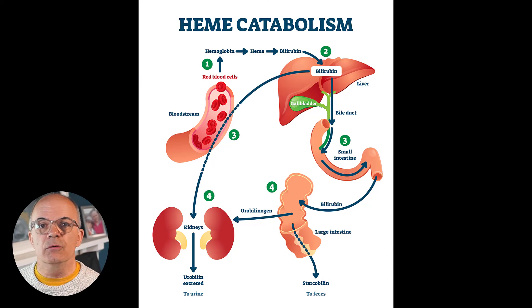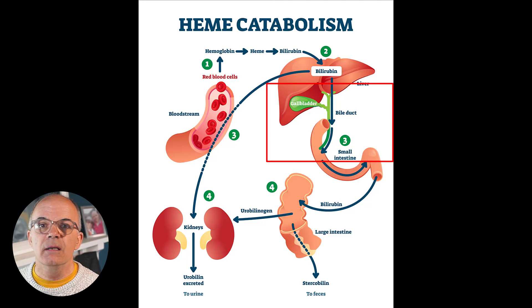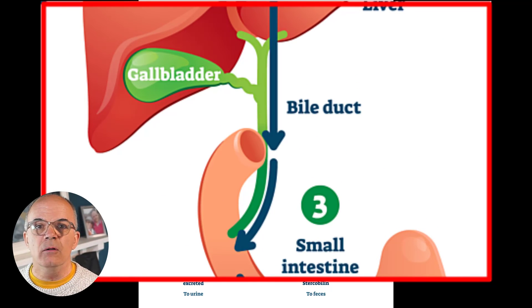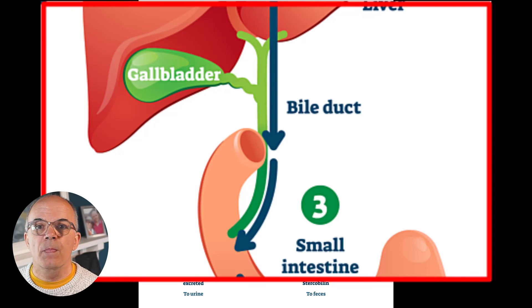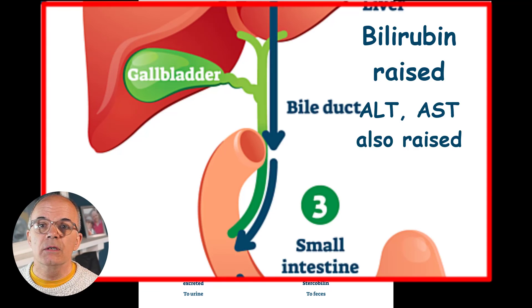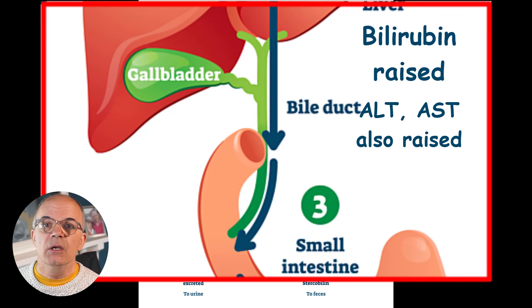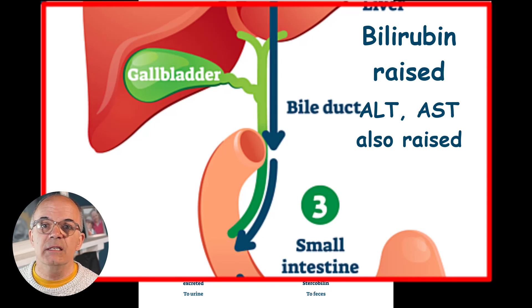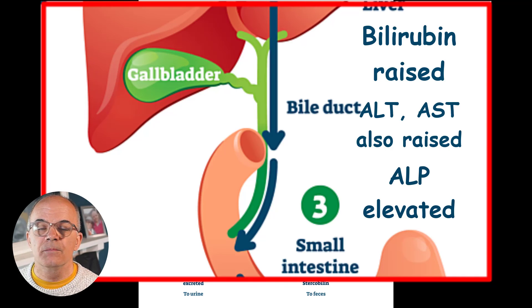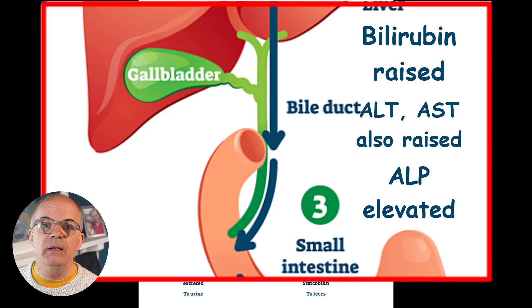Post-hepatic causes of jaundice are mainly related to the biliary tree — anything that slows down the movement of bile, or cholestasis. So gallstones, strictures of the gallbladder, or tumours within the biliary tree. This will cause the bilirubin to back up, which will also cause liver damage. Unlike intra-hepatic damage where the alkaline phosphatase will rise only slightly, in post-hepatic causes the ALP — alkaline phosphatase — will be significantly elevated. Alkaline phosphatase is released both in the liver and by the biliary tree when there is damage.